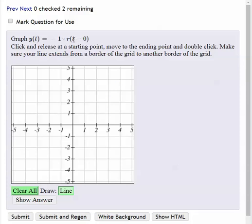Let's draw a ramp function with MyOpenMath. So here we have a slope of minus 1 and we have a delay of 0. So I'll start at 0 and because I'm going down minus 1, I'll click on 0 and then go from there.